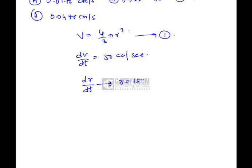Now consider equation 1 and differentiate it. If I differentiate with respect to t, dv by dt equals 4 by 3 pi into 3 into r square dr by dt.